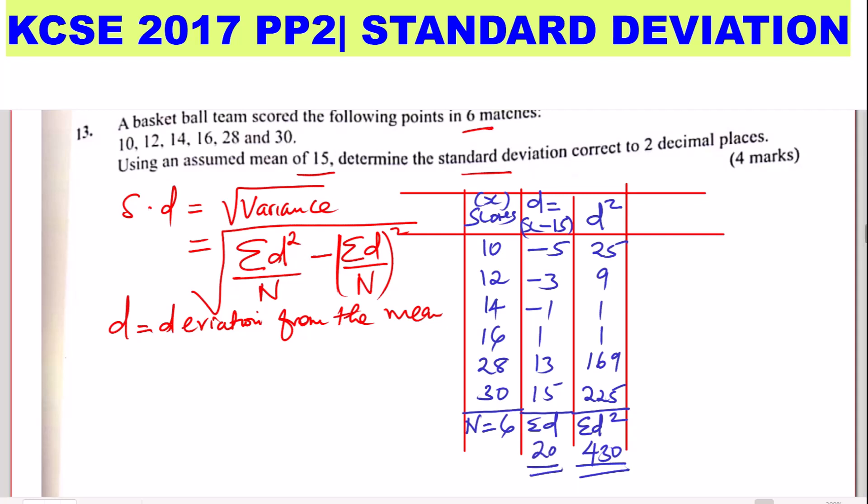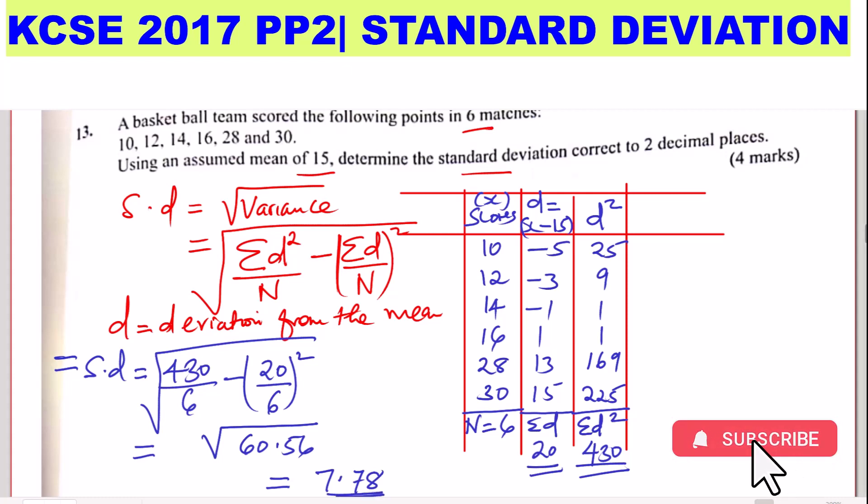Now using this data, we can substitute in the formula. So standard deviation, therefore, is given by the summation of D squared, which is 430, divided by N which is 6, subtract summation of D which is 20 divided by 6, then you square this and get the square root. So work out this one using a calculator. So 430 divided by 6 subtract 20 divided by 6 squared. You are required to give two decimal places. This will give the square root everything under the square root sign will give 60.56. When you get the square root of 60.56, you get 7.78 correct to two decimal places.